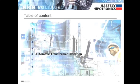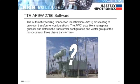Next is the automatic transformer detection mode. The automatic winding connection identification aids in the testing of transformers where the winding configuration is unknown. It acts as a nameplate guesser and detects the transformer configuration and vector group.